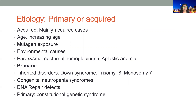For the etiology, the majority of cases are acquired, and age is one of the major risk factors because with increasing age there is increasing exposure to mutagens and environmental toxins. Other acquired causes include paroxysmal nocturnal hemoglobinuria and aplastic anemia. Familial causes are rare and include chromosomal anomalies such as Down syndrome, Trisomy 8, Monosomy 7, congenital neutropenia syndromes, DNA repair defects, and constitutional genetic syndromes.